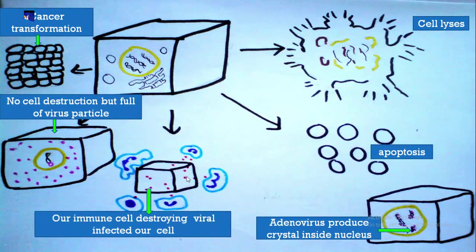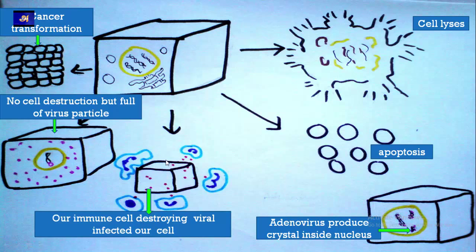What happens to the fate of a virus-infected cell? Either the cell may go for cell lysis — its membrane disrupts and it collapses — or the cell will go for cell suicide, technically called apoptosis, which is programmed cell death. Alternatively, in the case of adenovirus, a crystal forms inside the nucleus. The virus-infected cell can also be recognized by our body's patrolling police force — white blood cells — which surround and destroy the infected cells. If there is no cell destruction, the virus uses the cell as a factory to grow further. A special case, called cancer transformation, occurs in a very few viruses like papillomavirus, which causes the cell to proliferate.